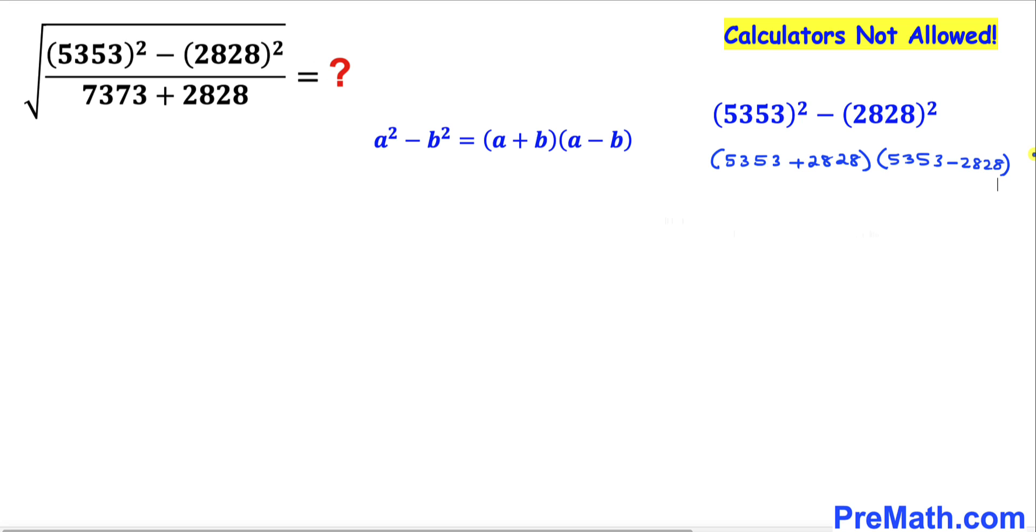Now if we add these first two numbers, that's going to give us 8181 times—when we subtract these numbers—that's going to give us 2525.